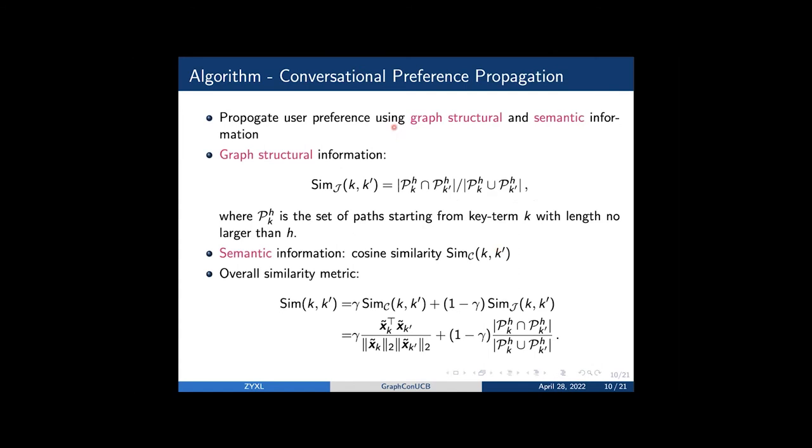We now introduce how we propagate the user preference. We consider using the graph structure and the semantic information. The graph structure information is defined as the Jaccard similarity between PHK and PHK prime, whereas PHK is a set of paths starting from K with length no larger than H.